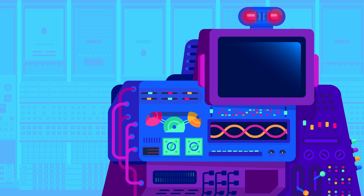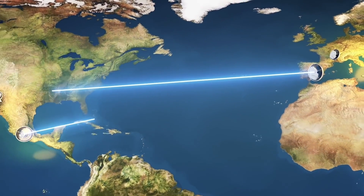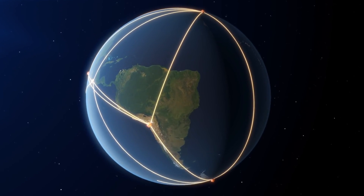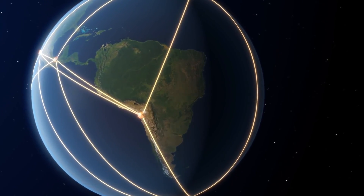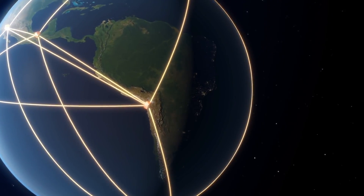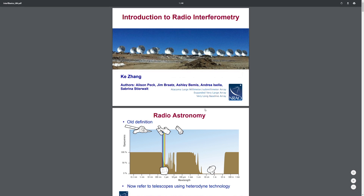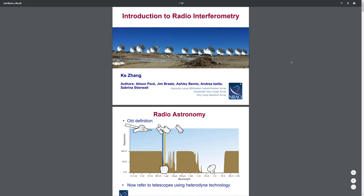When all the telescopes' data is collected, all the timing is synchronized. Using the same data from all telescopes and applying a Fourier transform algorithm, we combine everything to identify the virtual telescope and construct the black hole image. This advanced technique is called Very Long Baseline Interferometry, or VLBI.